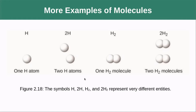Here's an example of the subtle differences in how we write things. A capital H means one hydrogen atom. A 2 in front of it means two individual hydrogen atoms. When the 2 is a subscript after the H, it means two hydrogen atoms bonded together forming one molecule. A 2 in front of that gives two hydrogen molecules for a total of four atoms.